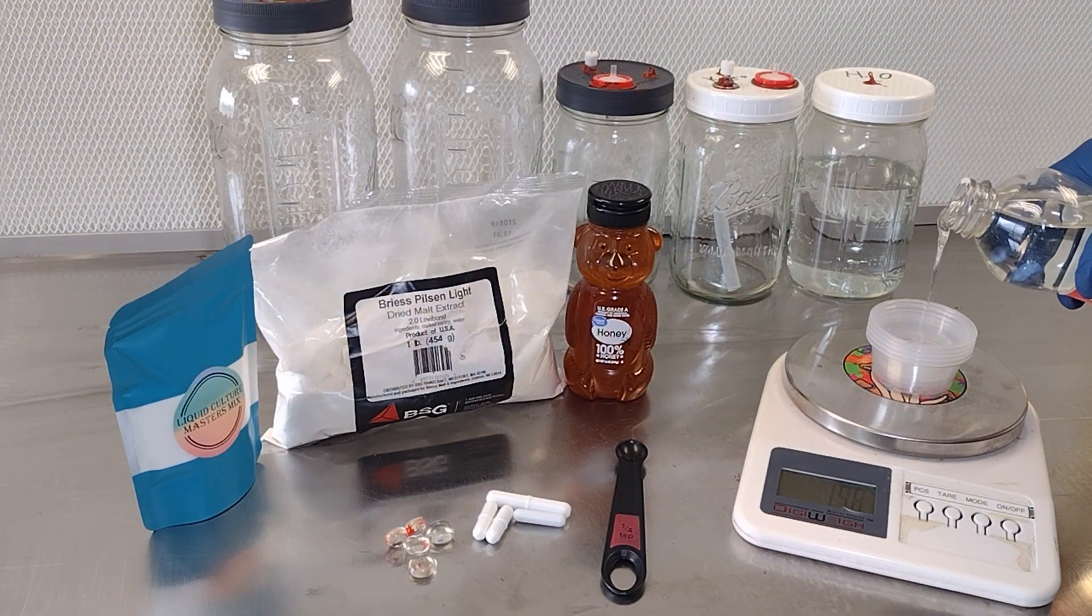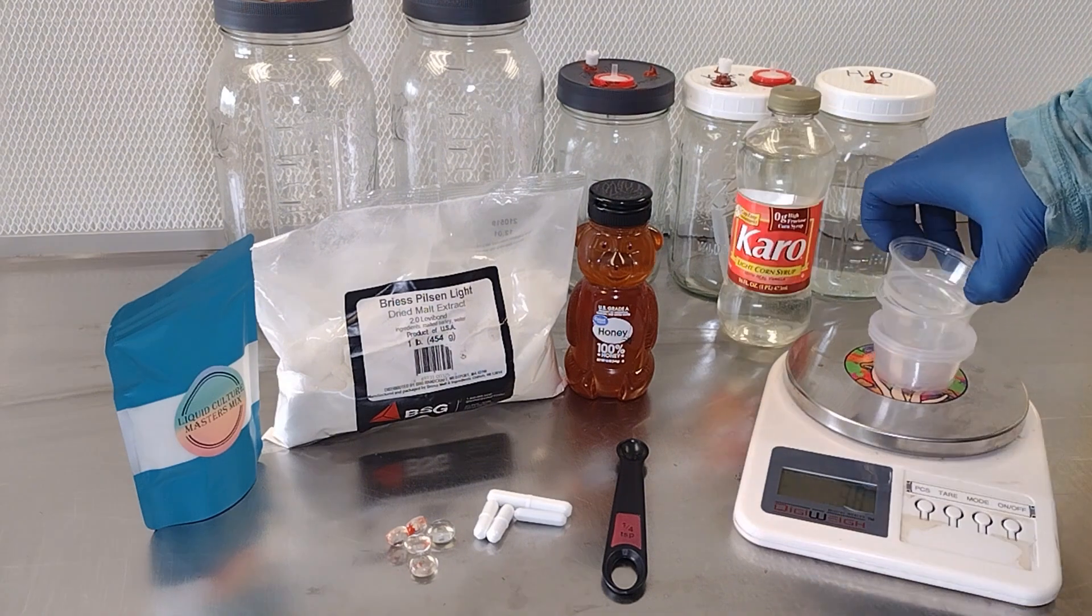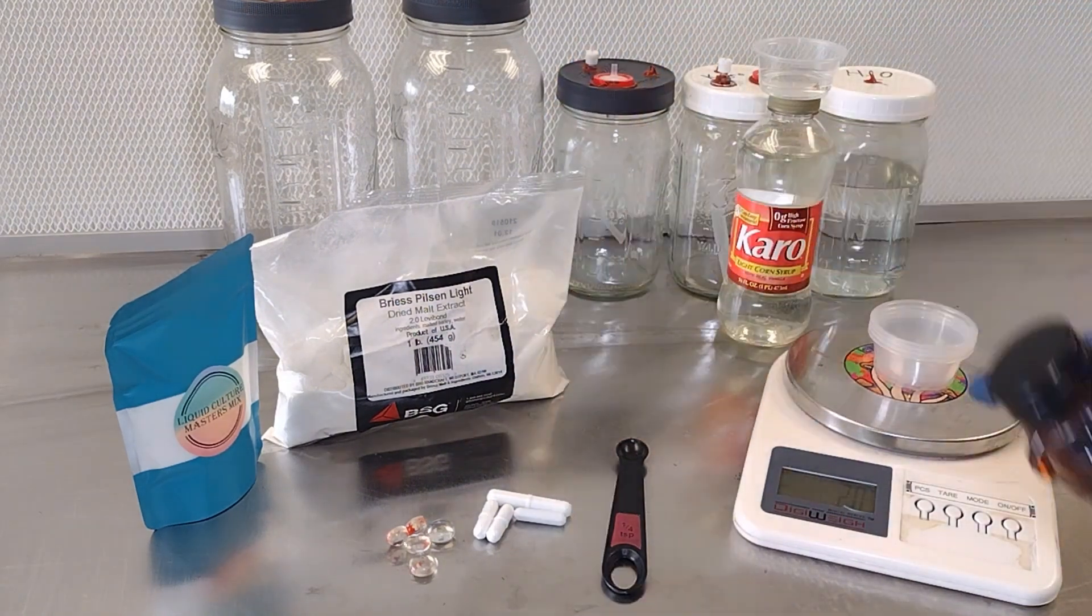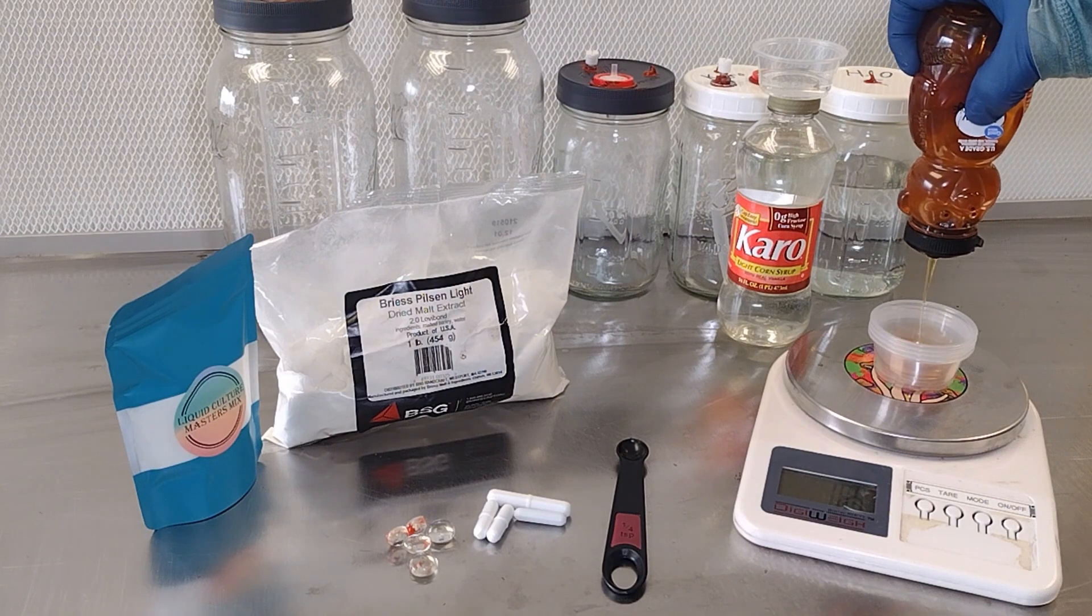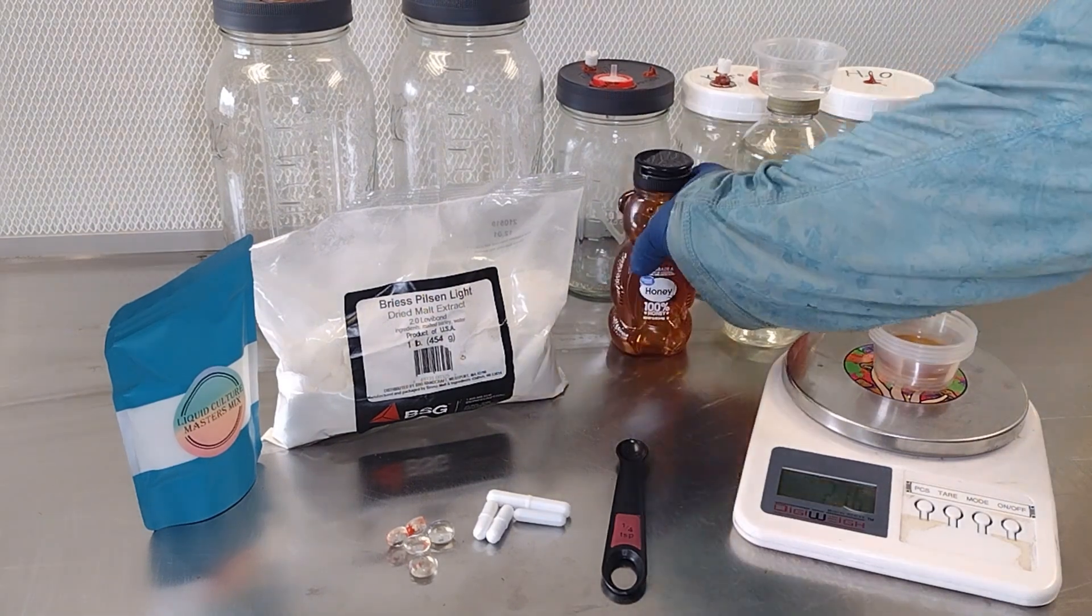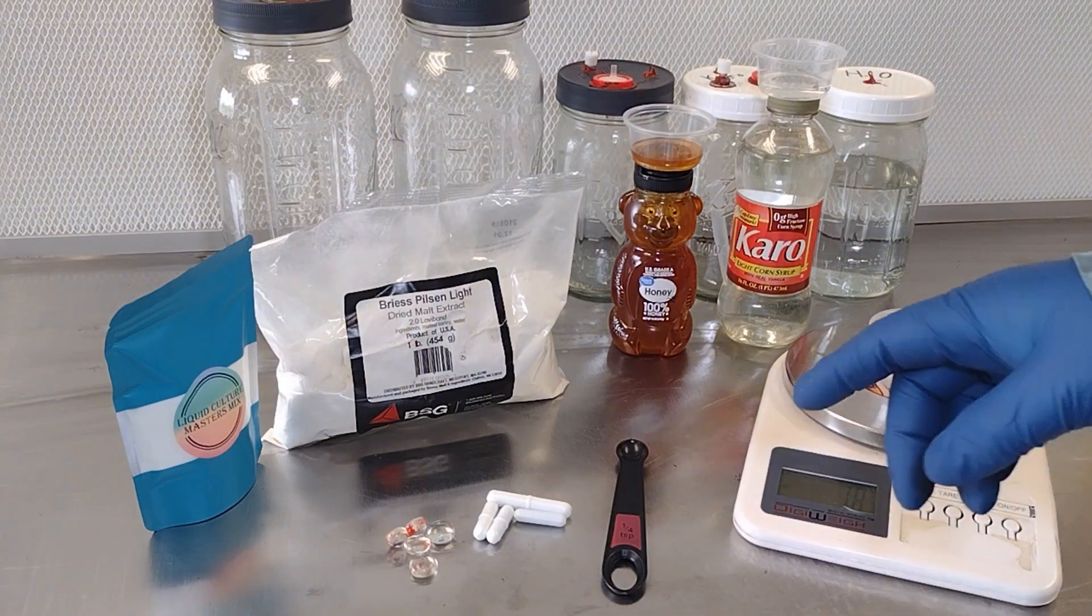So to start off with, I'm going to be using 4% Chiron, which is 20 grams, same thing with the honey. So we use 20 grams of honey, and this is for our 500ml containers.